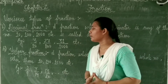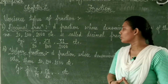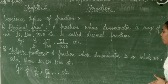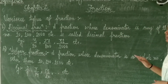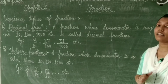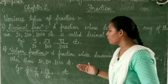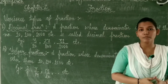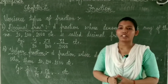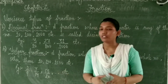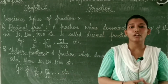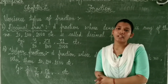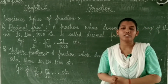The next one is the vulgar fraction. A fraction whose denominator is a whole number other than 10, 100, and 1000 is a vulgar fraction. It is just opposite to the decimal fraction — in the vulgar fraction the denominator should not be 10, 100, 1000, 10,000, etc.